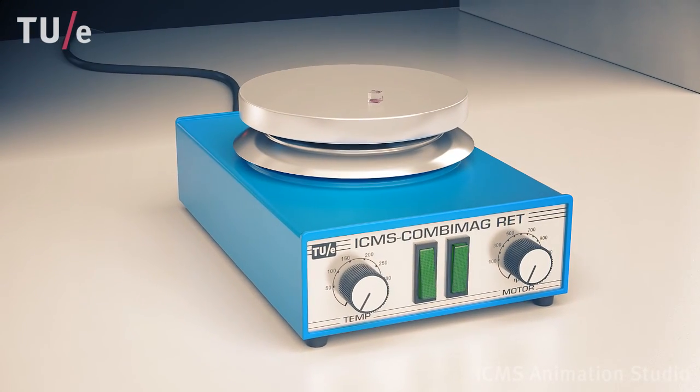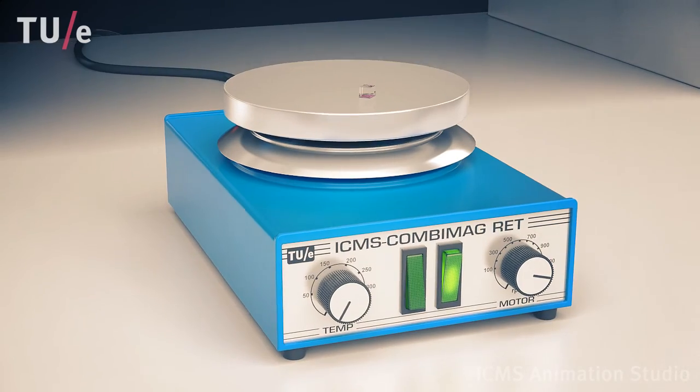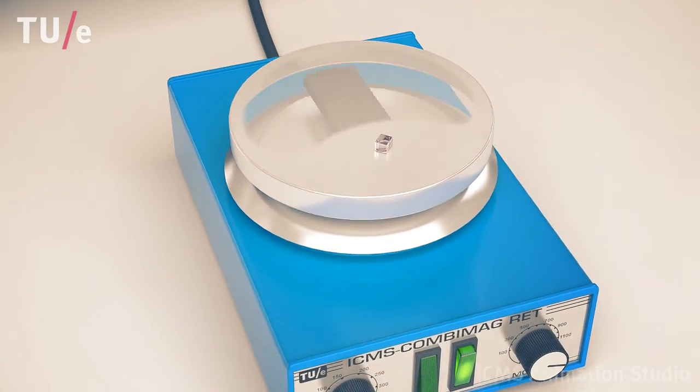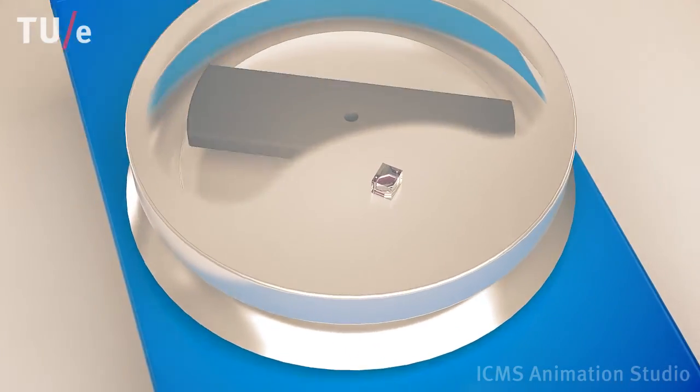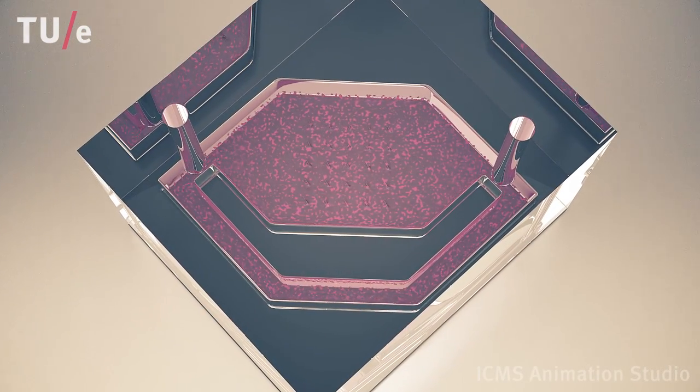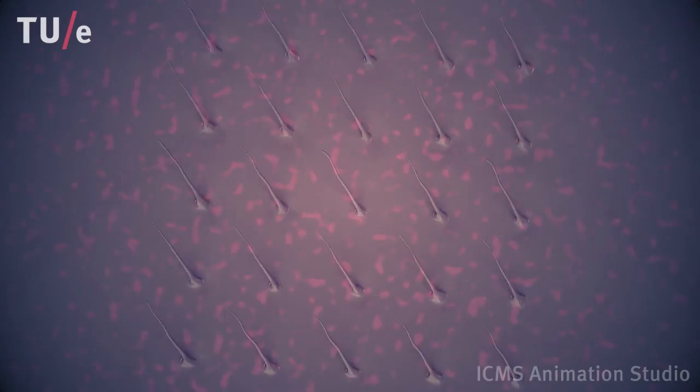The rotating magnetic field makes the artificial cilia rotate within the liquid, as shown by the motion of tracer particles present in the liquid. This generates substantial liquid velocities.